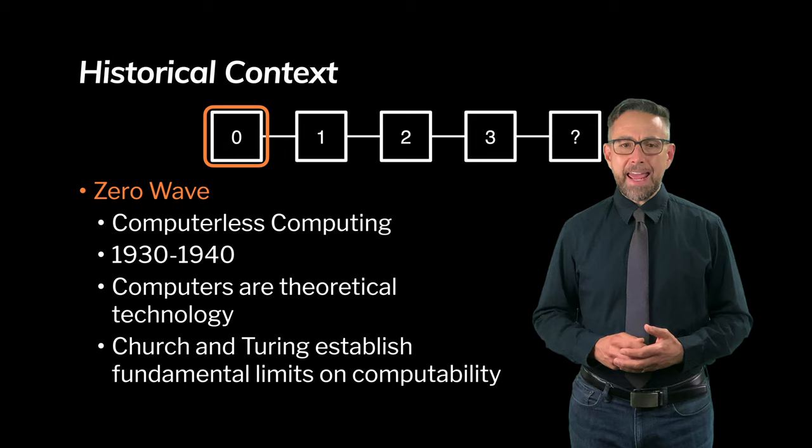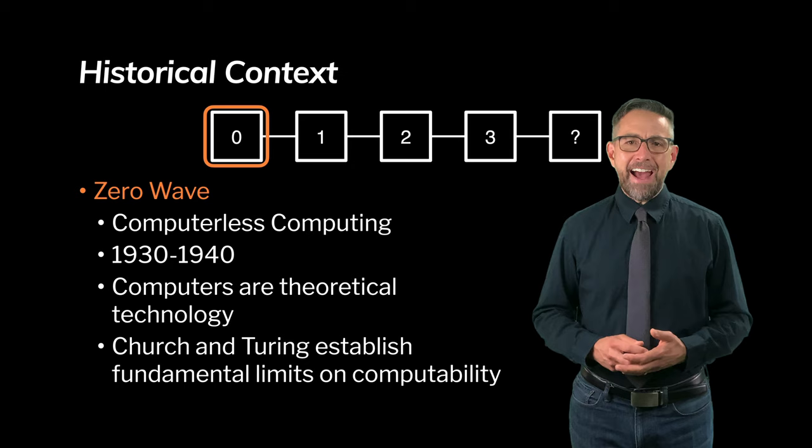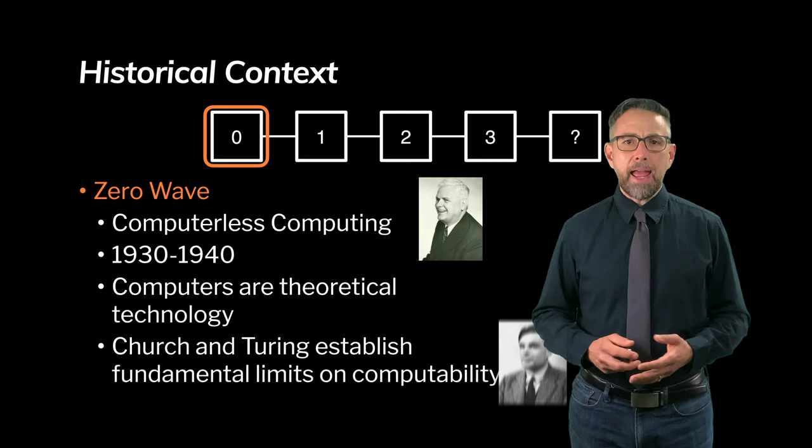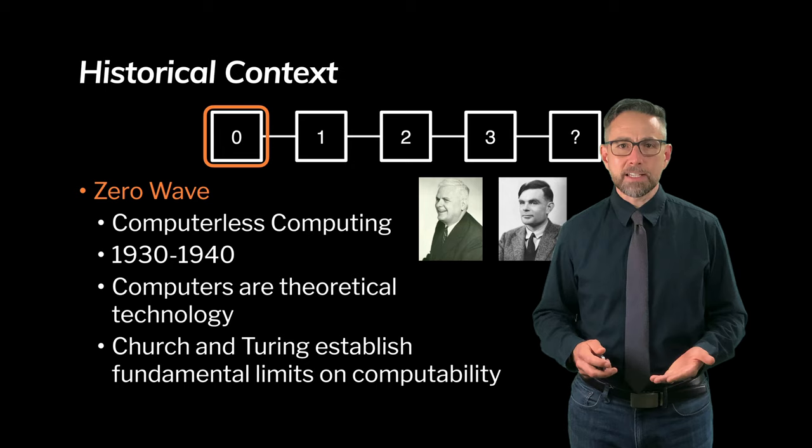I would call this one the Zero Wave of computing. This was the age of computerless computing. To give it a rough time frame I'd say that it was between about 1930 and 1940 when this was happening. At this point computers are theoretical technology and individuals like Church and Alan Turing established some fundamental limits on computability.